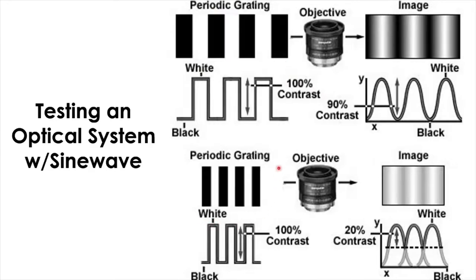On the other hand, with a high spatial frequency square wave grating going through the same camera, the resulting image is quite faint — losing about 80% of the original contrast. This is a general rule: any optical device loses contrast information, and the amount of contrast lost through the optical system can be quantified as a modulation transfer function.